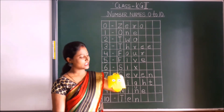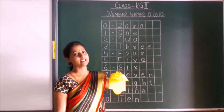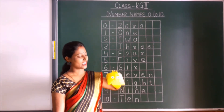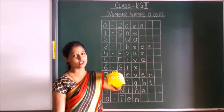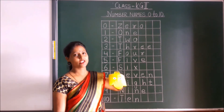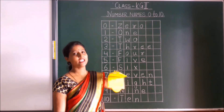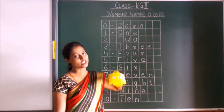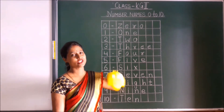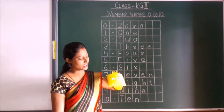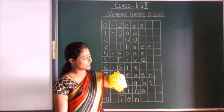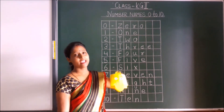S-I-X, 6. S-E-V-E-N, 7. S-E-V-E-N, 7. S-E-V-E-N, 7. E-I-G-H-T, 8. N-I-N-E, 9. N-I-N-E, 9. Now 1-0, T-E-N, 10. T-E-N, 10.